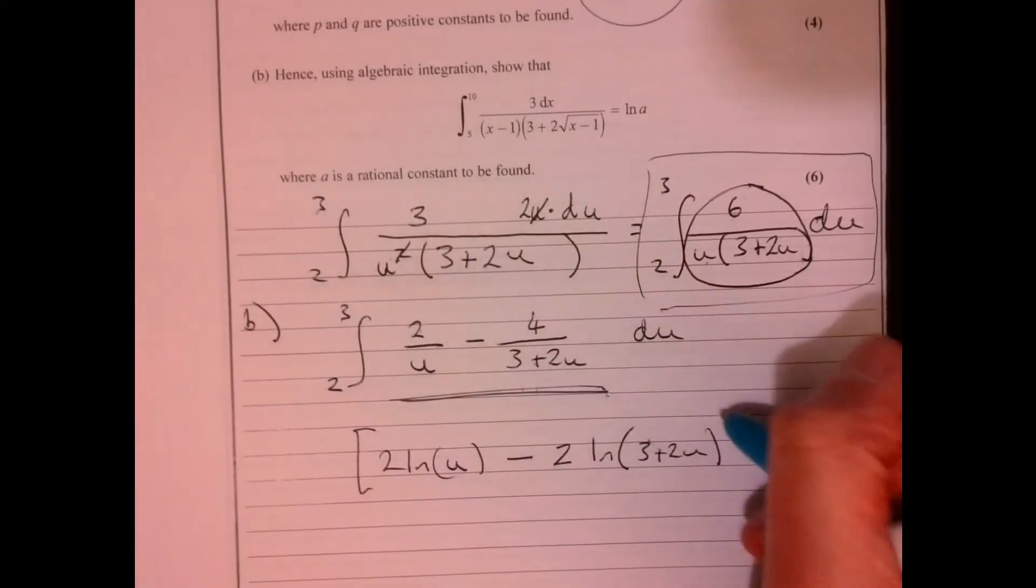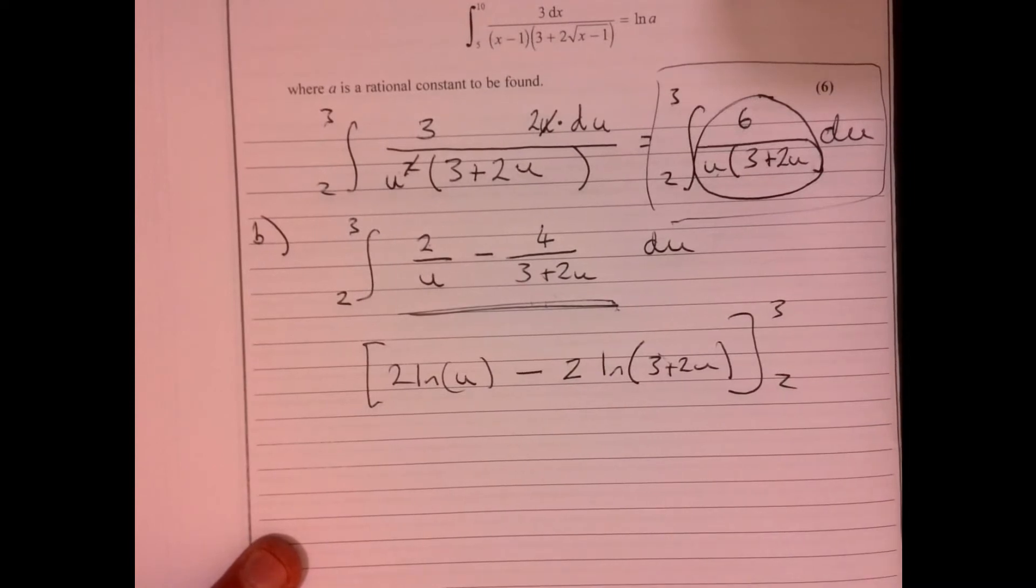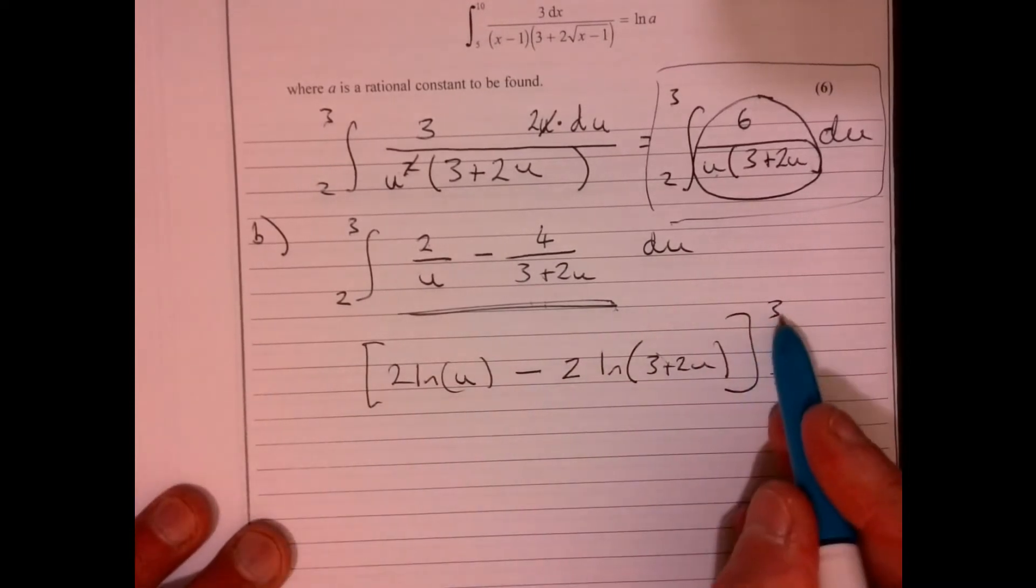Now, remember, we've got limits of three and two. So just take care from here. But do each step in turn. Don't try and rush it.